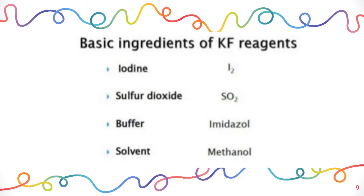The basic ingredients of Karl Fischer reagent: there are four basic reagents present — iodine, sulfur dioxide, a buffer, and a solvent. Imidazole is used as a buffer and methanol is used as a solvent. Previously, pyridine was used in place of imidazole, but pyridine is carcinogenic in nature, which is why it was replaced by imidazole.